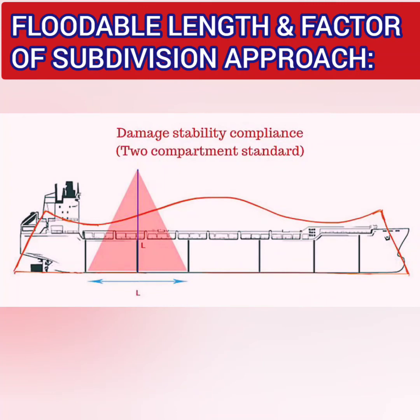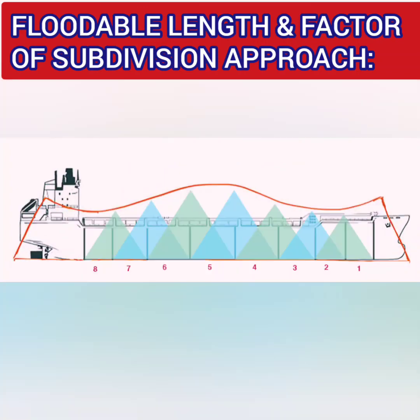The same calculation is done for all compartments. This particular ship complies with the one compartment standard of damage stability. When checking for the two compartment standard, if we assume flooding of two compartments and compare the length of the triangle with the floodable length curve, the ship clearly does not comply with the two compartment standard. By adding more subdivisions, the compartment standard can be increased.